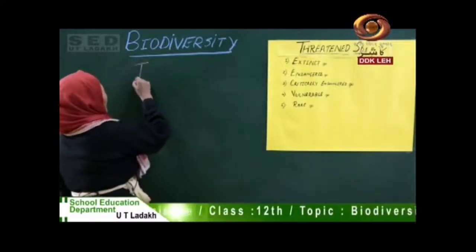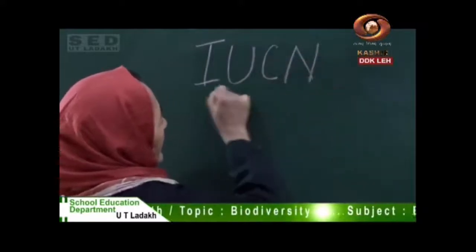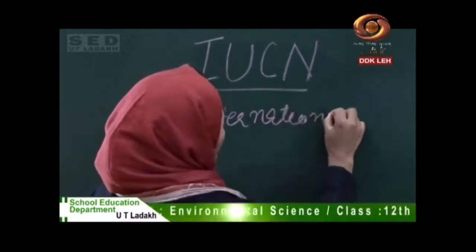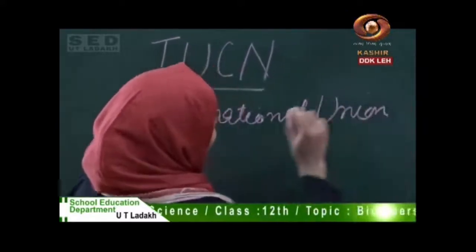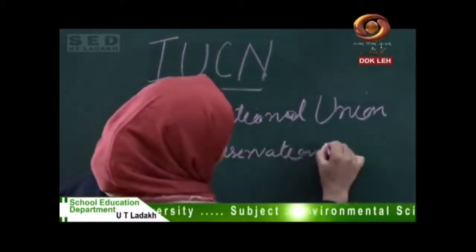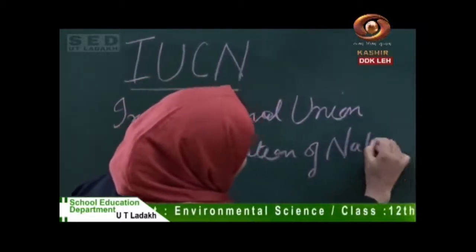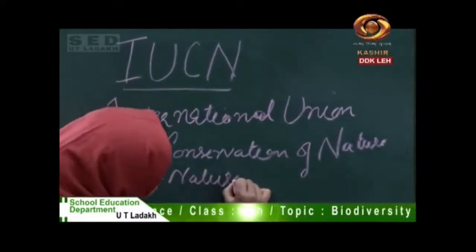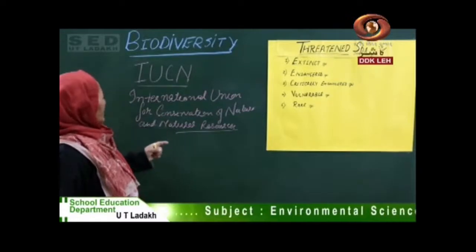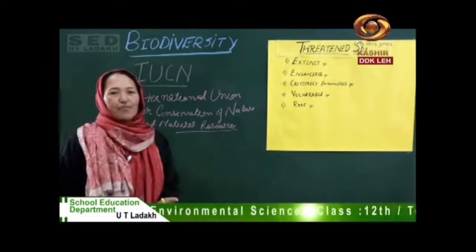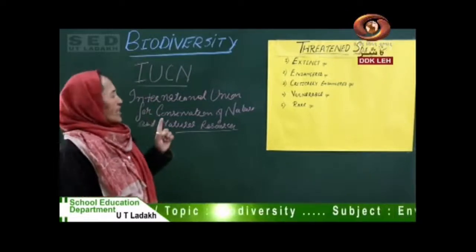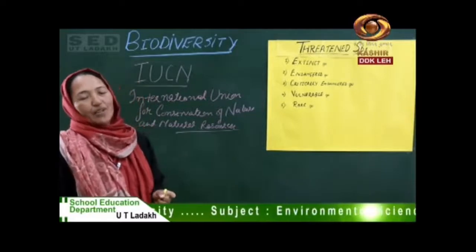Now, threatened species. IUCN — International Union for Conservation of Nature and Natural Resources. I'm stressing this abbreviation because there is always a question on IUCN in the objective part. IUCN is an organization focused on plants and animals on the endangered list.